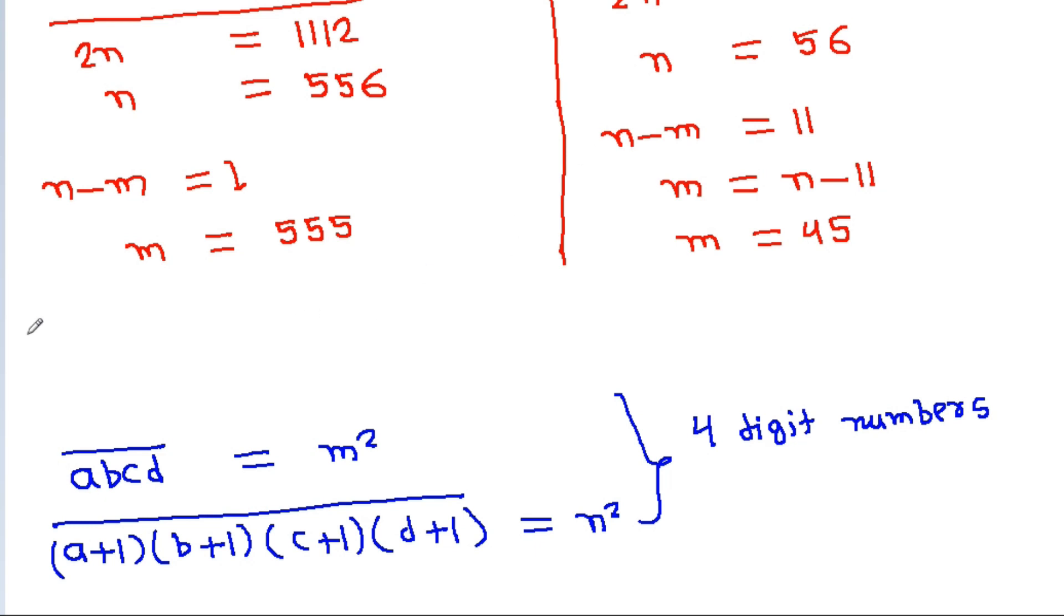And here M squared will be equal to 555 squared and N squared will be equal to 556 squared. And these are not 4 digit numbers.